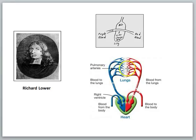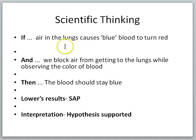Perhaps blood moving through the lung itself causes the color change. Maybe both events could cause the color change. What Lower needed to do was block the suspected cause of the color change. He needed to block A to see if B happens. He did this by observing the color of blood while suffocating an animal. The reasoning is as follows. If air in the lungs causes blue blood to turn red, and we block air from getting to the lungs while observing the color of blood, then the blood should stay blue. In fact, this is what Lower observed. So the hypothesis is supported.